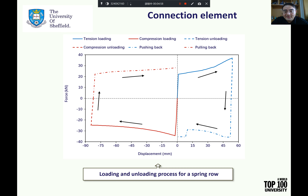It can be seen from this figure that the stiffness of both tension and compression unloading is very large, resulting in a sudden change of spring component force when unloading occurs. The simple unloading method adopted at the current stage is obviously not the best, but a softer unloading path will be explored later.